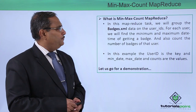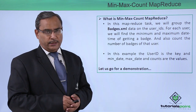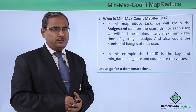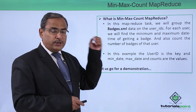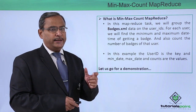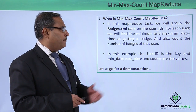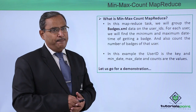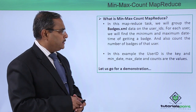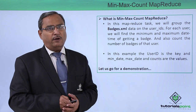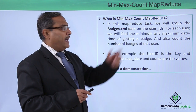So what is min-max-count MapReduce? In the MapReduce task, we will group the batches.xml data on the user ID. There is one column known as the user ID, and we will be forming a group over them. For each user, we will find the minimum and the maximum datetime of getting a batch, and also count the number of batches for that user. That is why it is called min-max-count MapReduce.